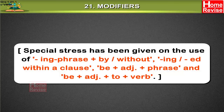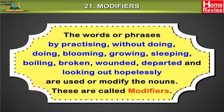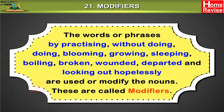Special stress has been given on the use of ing phrase plus 'by' or 'without', ing or ed within a clause, 'be' plus adjective plus phrase, and 'be' plus adjective plus 'to' plus verb. The words or phrases — by practicing, without doing, doing, blooming, growing, sleeping, boiling, broken, wounded, departed, and looking out hopelessly — are used to modify the noun. These are called modifiers.